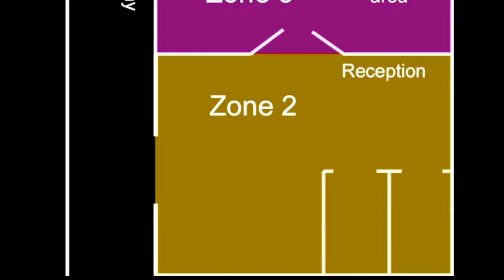Zone 2 is located between Zone 1 and the more restrictive Zone 3. In Zone 2, patients are under the general supervision of MR personnel. This includes the reception area, but Zone 2 also includes the dressing rooms and MRI screening rooms.